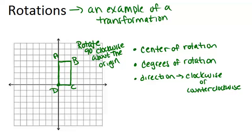So we have all three pieces of information we need to know. The center of rotation is the origin, and anytime it says about something, that's the point you're rotating about that will stay constant. The degrees that we're rotating will be 90 degrees, and the direction is clockwise.